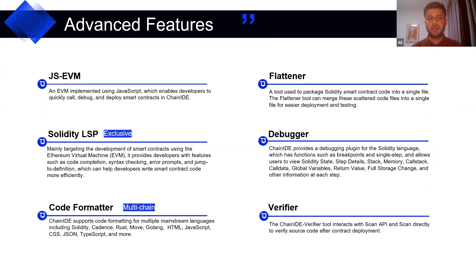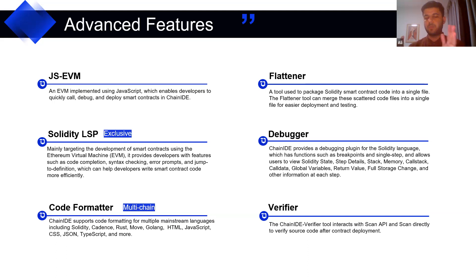Chain IDE has different plugins including JS, EVM, Solidity LSP for automatic completion, syntax checking, and a code formatter. There is also a Flattener — for example, if you are importing files in your Solidity file, the Flattener will combine all the code into one file, and that file is used when you verify your smart contract. We will check all these plugins during the live demo.